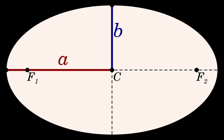In terms of the semi-latus rectum and the eccentricity, a equals l/(1 − e²). The transverse axis of a hyperbola coincides with the major axis. In a hyperbola, a conjugate axis or minor axis of length 2b, corresponding to the minor axis of an ellipse, can be drawn perpendicular to the transverse axis, the latter connecting the two vertices of the hyperbola, with the two axes intersecting at the center of the hyperbola.